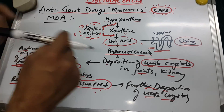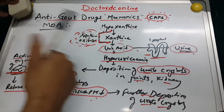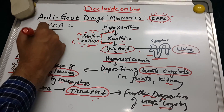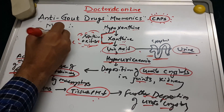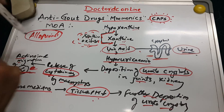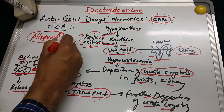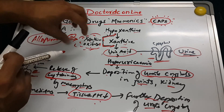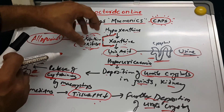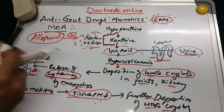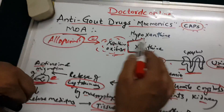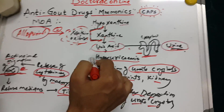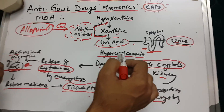The drug allopurinol works by inhibiting xanthine oxidase. Due to this inhibition, hypoxanthine cannot be converted to xanthine, and xanthine cannot be converted to uric acid — so there is no further production of uric acid. That is the main mechanism of action of allopurinol.